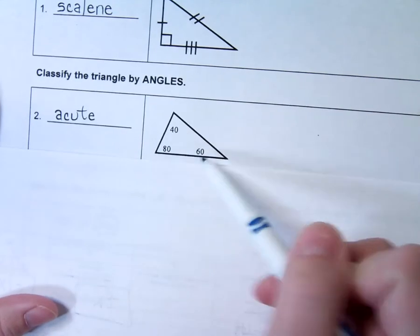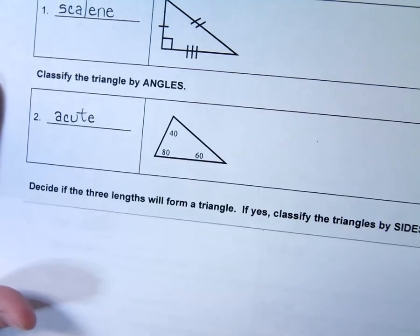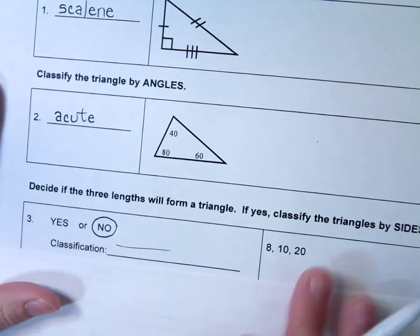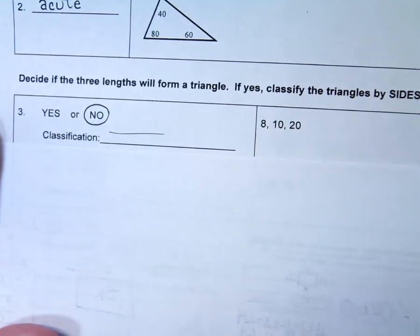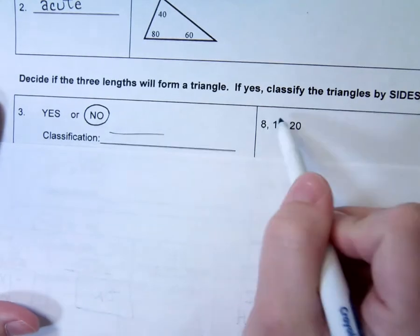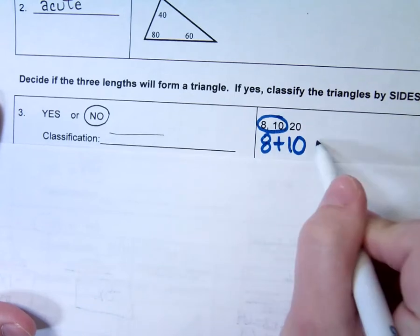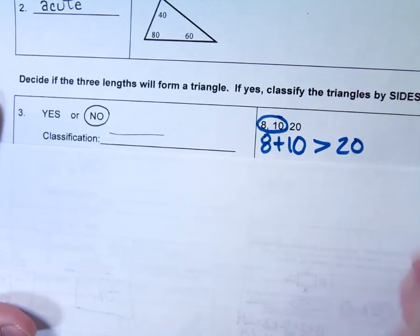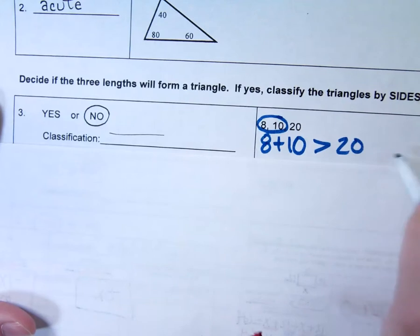This section wants to know if the three lengths would form a triangle, and if they do, we want to classify what kind of triangle it is. Remember, the two smallest sides added up have to be greater than the third side. What's 8 plus 10? 18. Is 18 greater than 20? No — that's why this does not make a triangle.